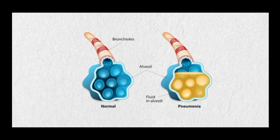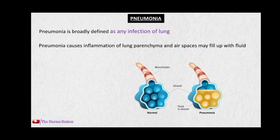These alveoli and air spaces are the sites where gaseous exchange takes place — where the blood receives oxygen and carbon dioxide leaves. Oxygen enters the alveoli to be exhaled. When these air spaces are filled with fluid, gaseous exchange does not take place normally.